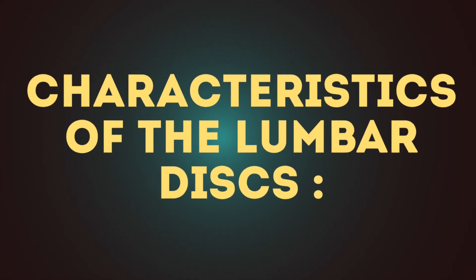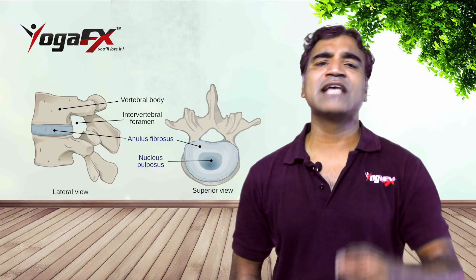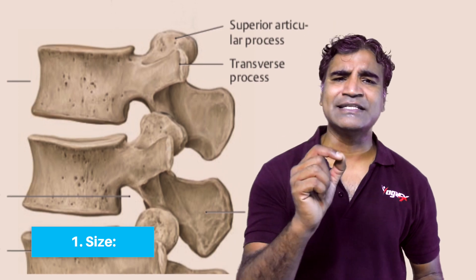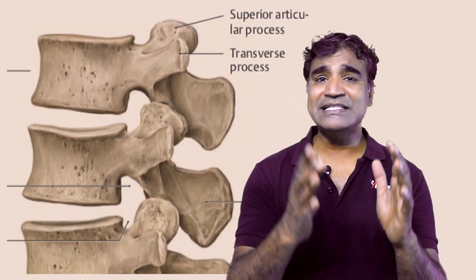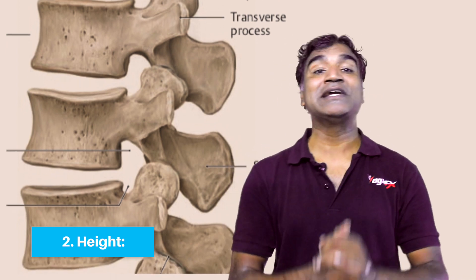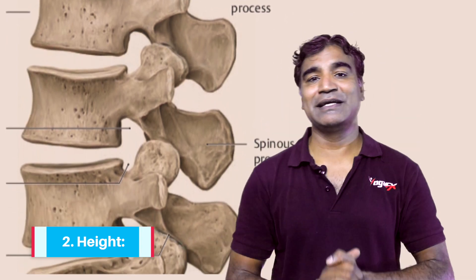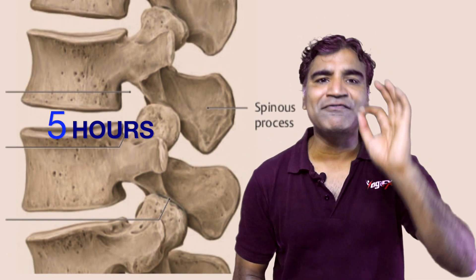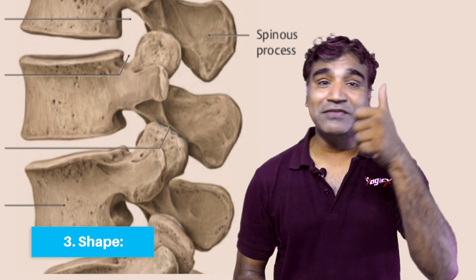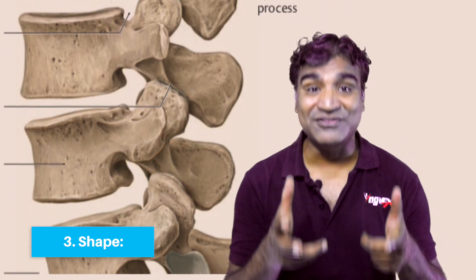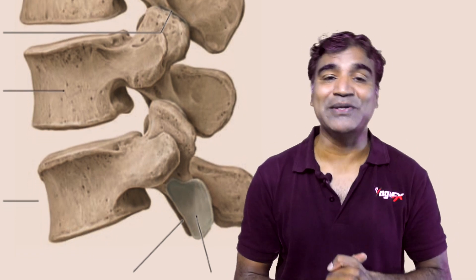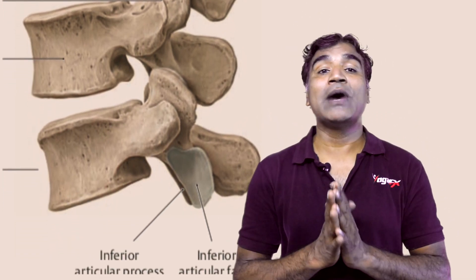The lumbar intervertebral discs have distinguishing features. In terms of size, they are the thickest compared to other spinal regions and are thicker in the front than the back. In terms of height, the lumbar disc becomes shorter during the day due to the weight of the upper body; sleeping for a minimum of five hours helps the discs regain their original shape. In terms of shape, the disc changes with movement — when the spine bends forward, the front height decreases while the posterior height increases, with the opposite occurring when bending backward.